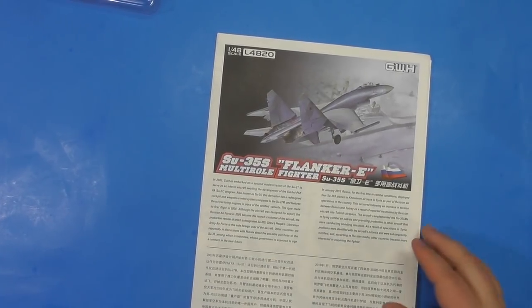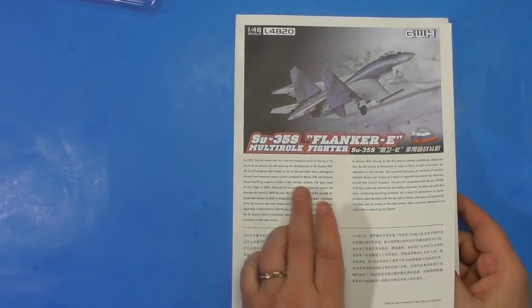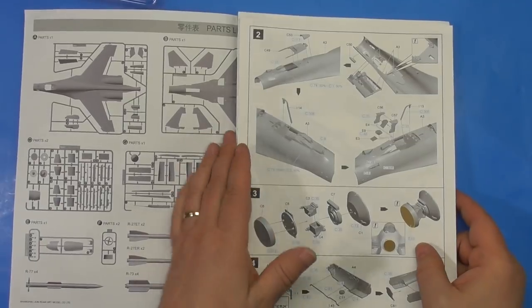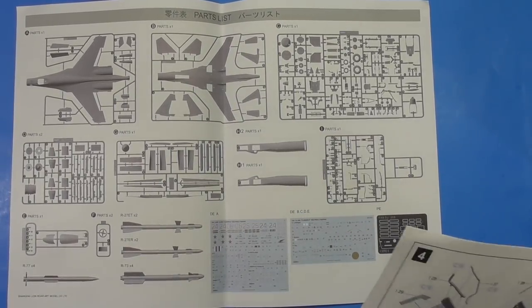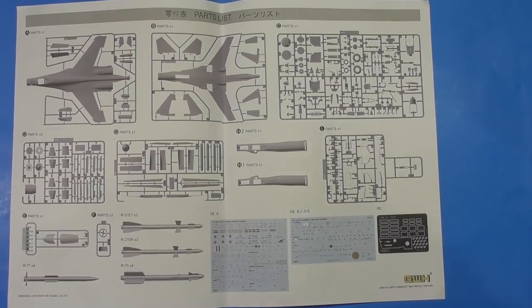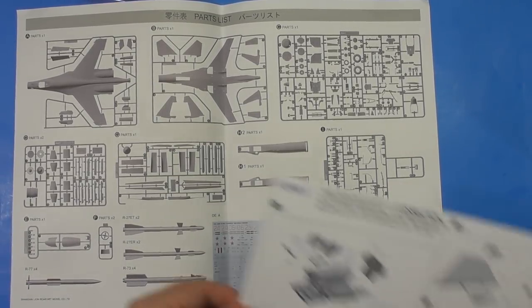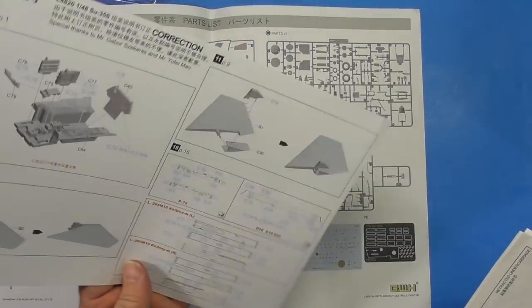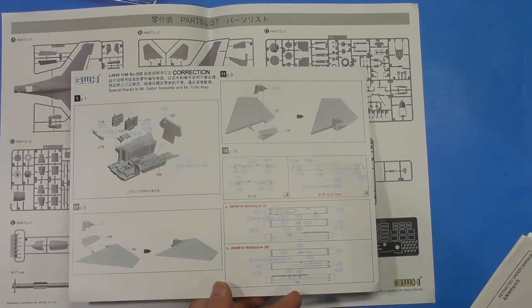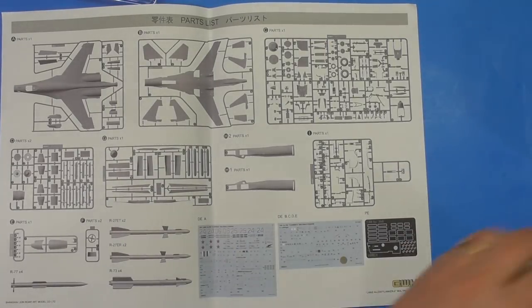Instructions. Typical beautifully nice Great Wall Hobby instructions. A little bit about the aircraft, sprue map. It's kind of all in pieces though. There is a correction sheet. Step 1, Step 11, Step 18, Step 11 again. Same thing on both sides. So you got a correction sheet because they made a mistake.